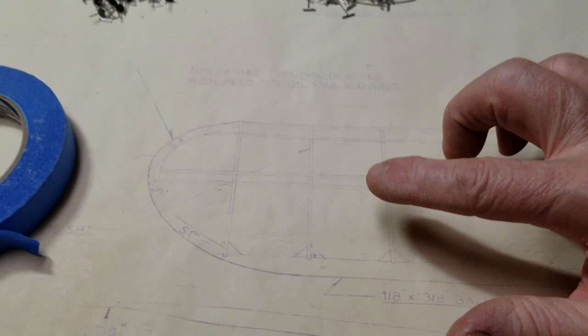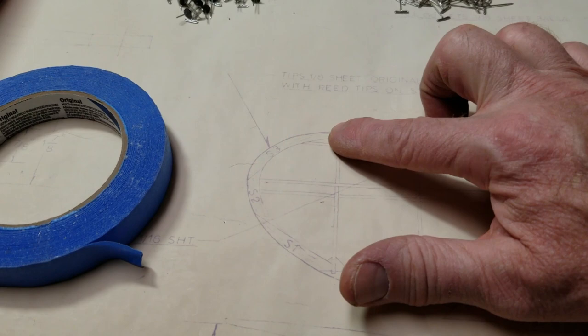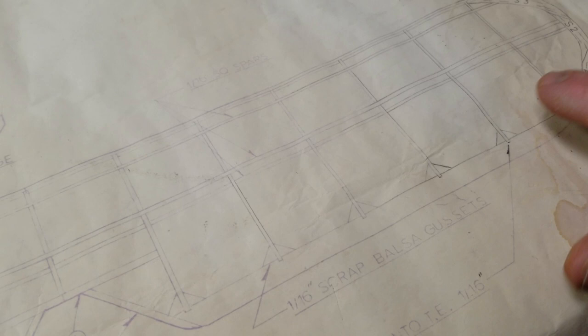But this is a short kit, so I'll have all the ribs to cut out of the printed wood. These wing tip pieces S1, 2, and 3. And I'll have to supply the trailing edge, the leading edge, and all the spars.